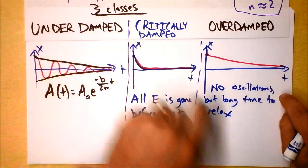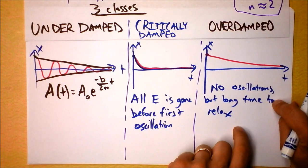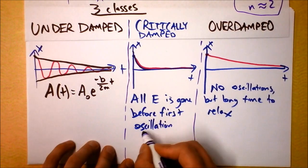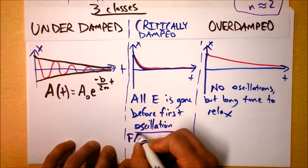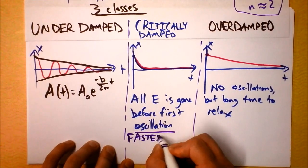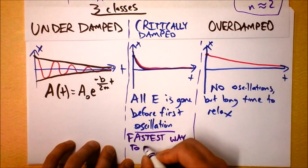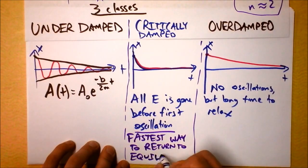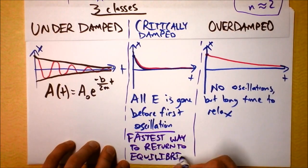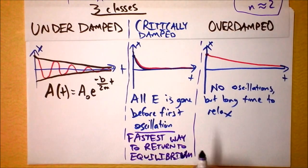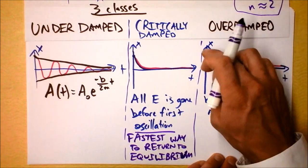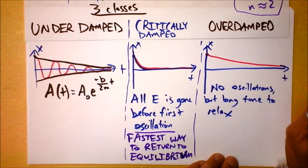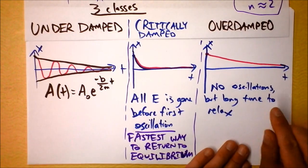That's the difference between critically damped and overdamped. All the energy is gone before the first oscillation in critical damping, and this is the fastest way to return to equilibrium. Overdamping does return to equilibrium — with infinite time we get exactly there — but over any finite amount of time it gets close enough that you'd say it's relaxed. But overdamping takes too long.